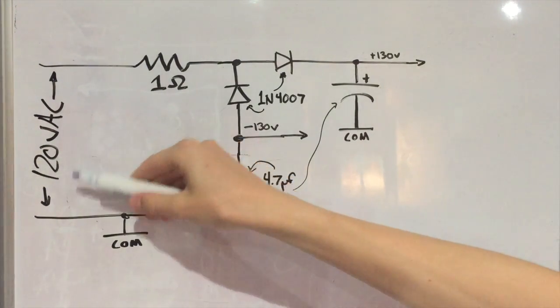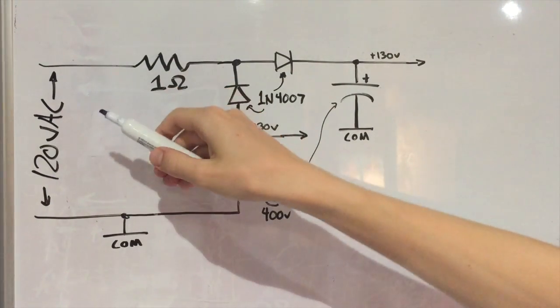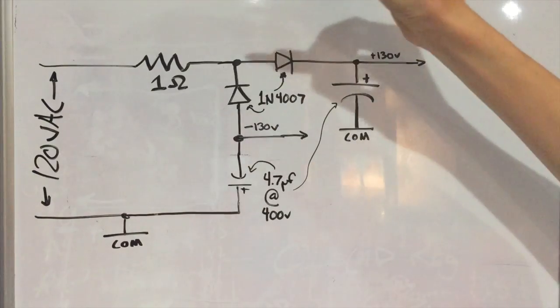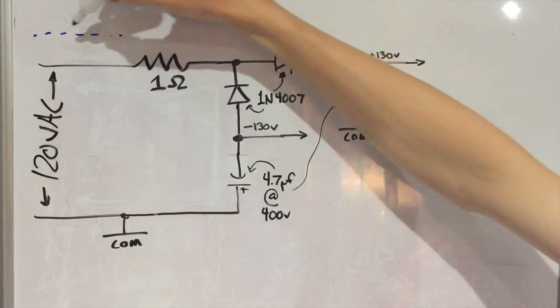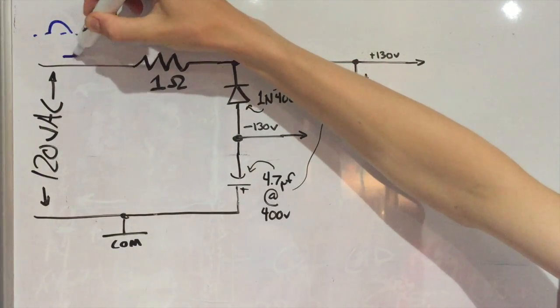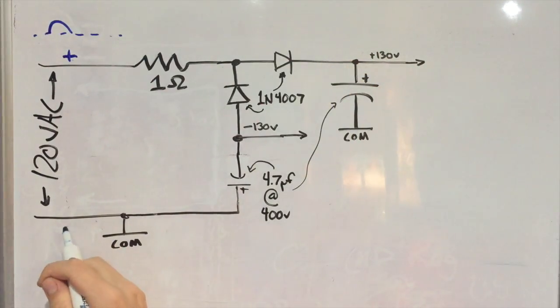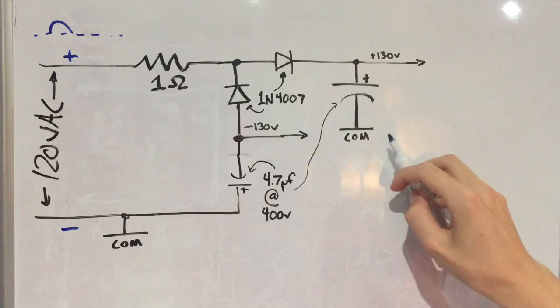So on the input here you can see we've got 120 volts AC, and where I live it's about 60 Hertz. So on the first half of the cycle, say that this is zero volts here, on the first half of the cycle it's going to become positive. So this top rail will be plus and this bottom rail will be negative, and for schematic purposes, common will just be my system ground.